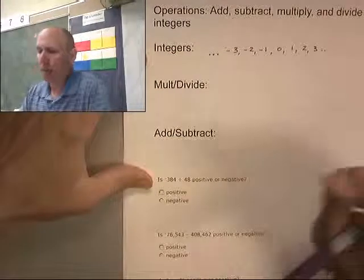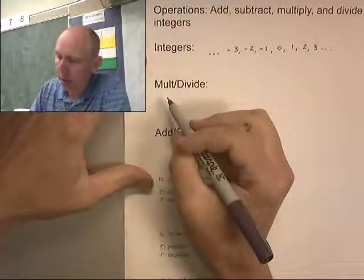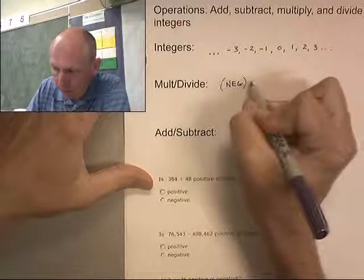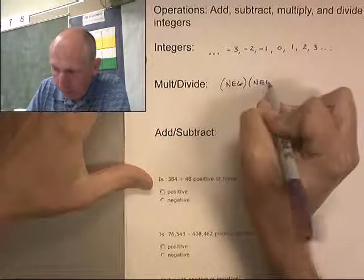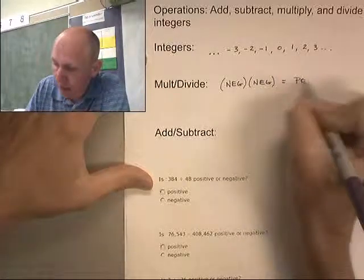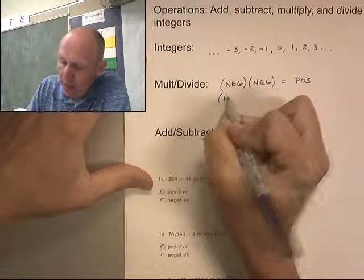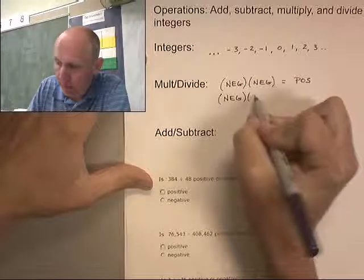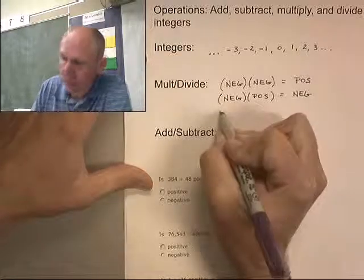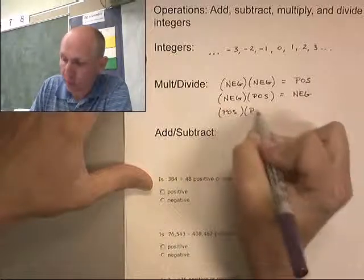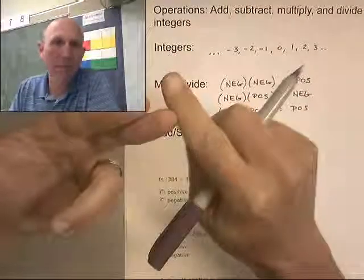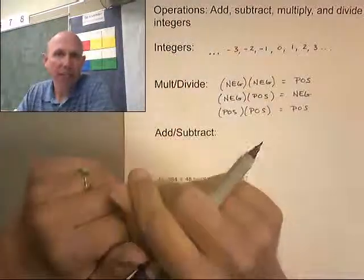Multiplication and division. We have a couple basic rules here. We know that if we multiply a negative times a negative, or a negative divided by a negative, is going to give you a positive, and a negative positive will get you a negative, and, of course, a positive positive remains a positive. Same signs, positive, different signs, negative.